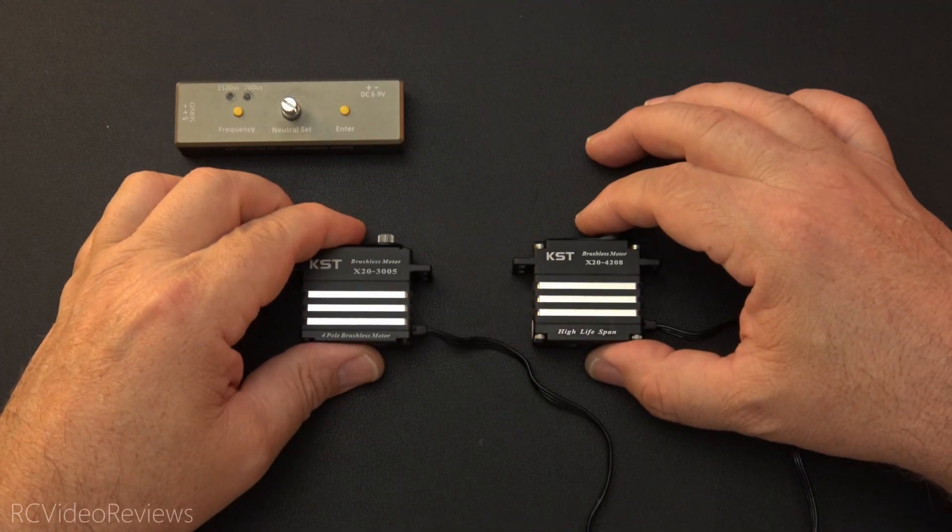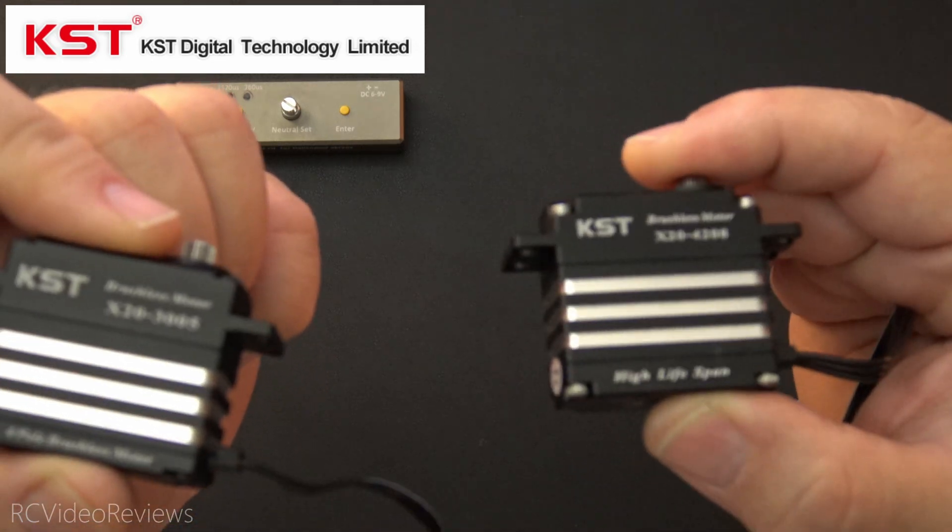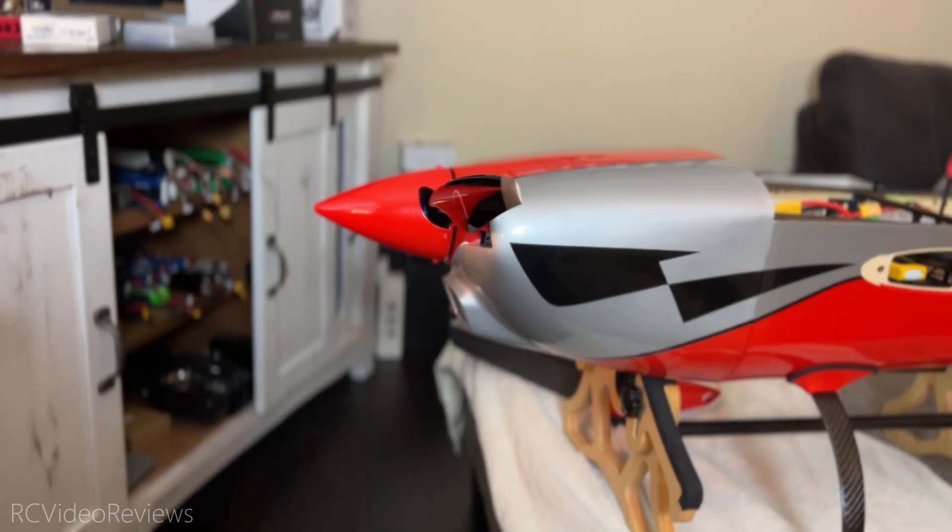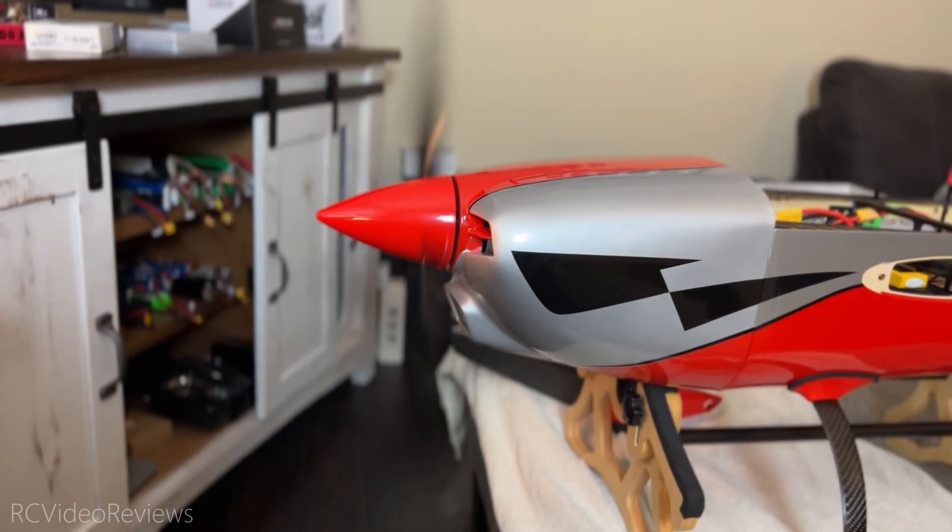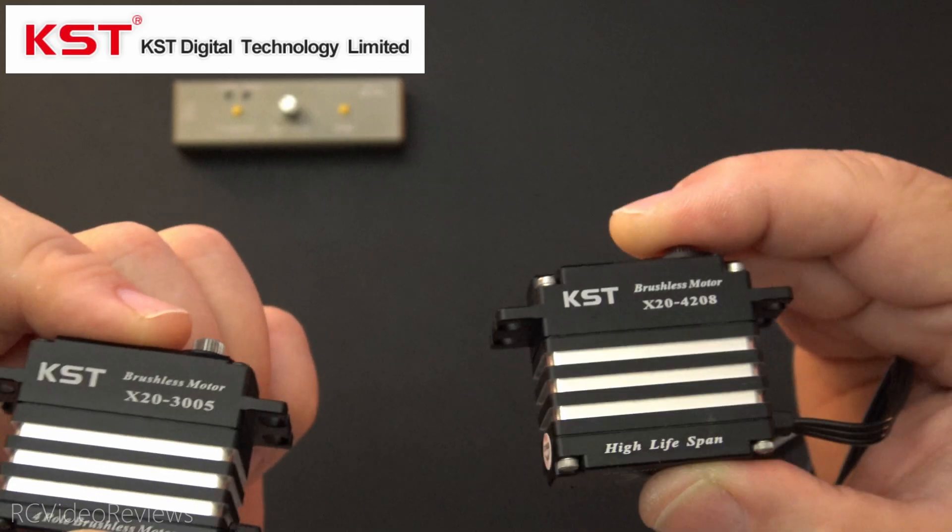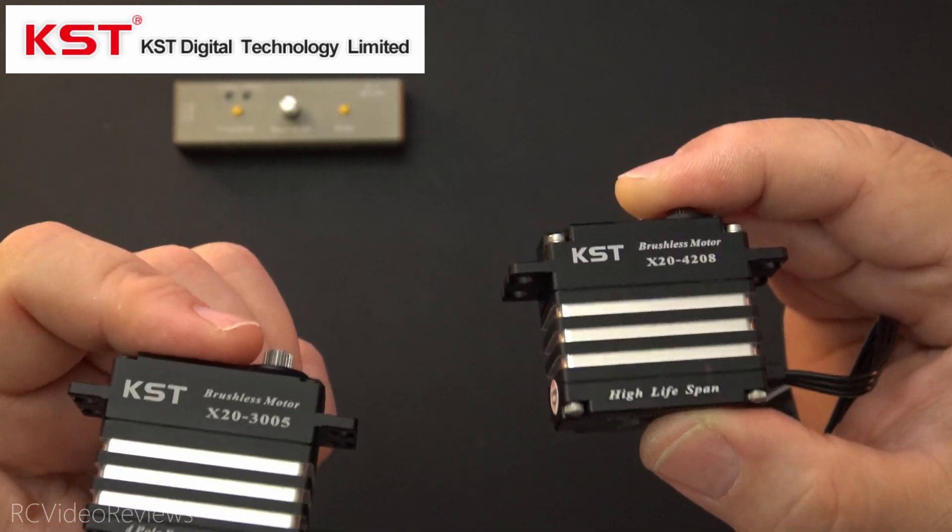Before I get into the content, I need to let you know KST did sponsor this video by sending me a couple of 4208s and some 3005s for a plane build that I'm working on right now. These are going to be going into a 78-inch Extreme Flight Extra NG. So with that out of the way, thanks to KST for sending these out for review. I'll have links in the description if you'd like to pick a couple of these up for yourself.